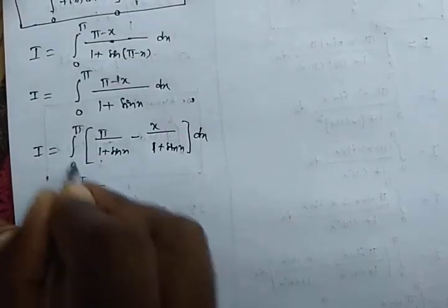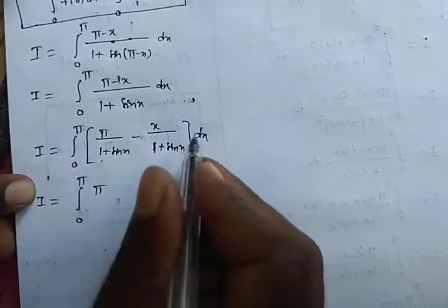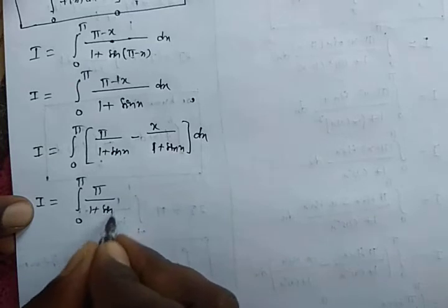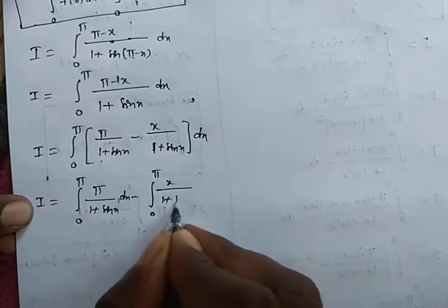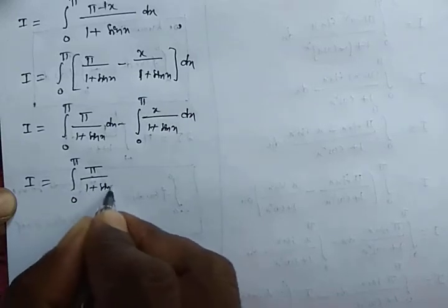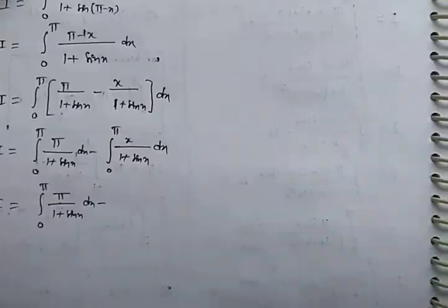Into dx. So I equals the integral from 0 to π. Using the linear property of integration, we can split this as π times the integral from 0 to π of 1/(1 plus sin x) dx, minus the integral from 0 to π of x/(1 plus sin x) dx. That second integral is exactly I.